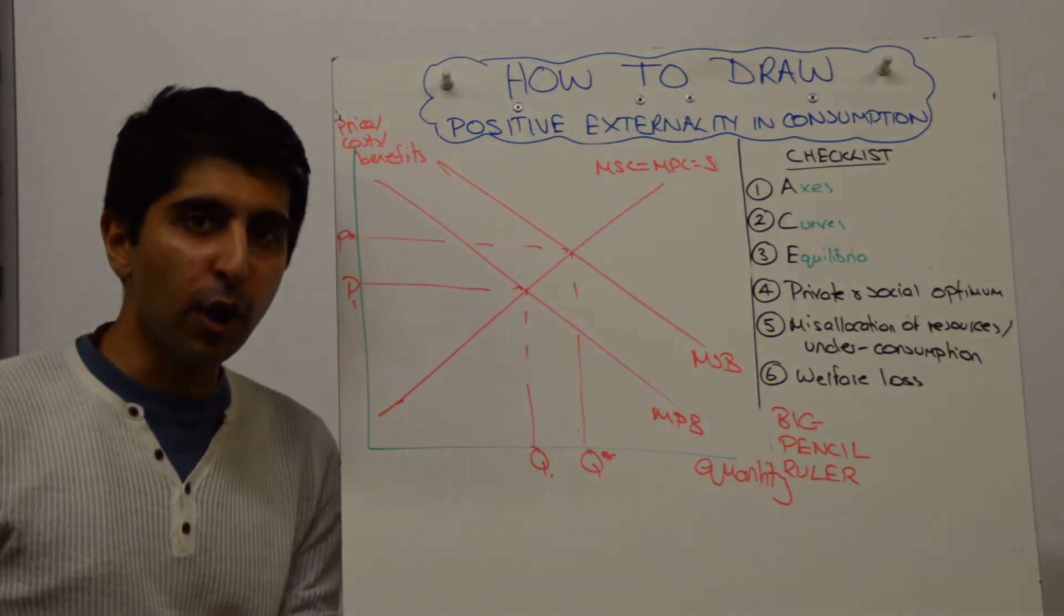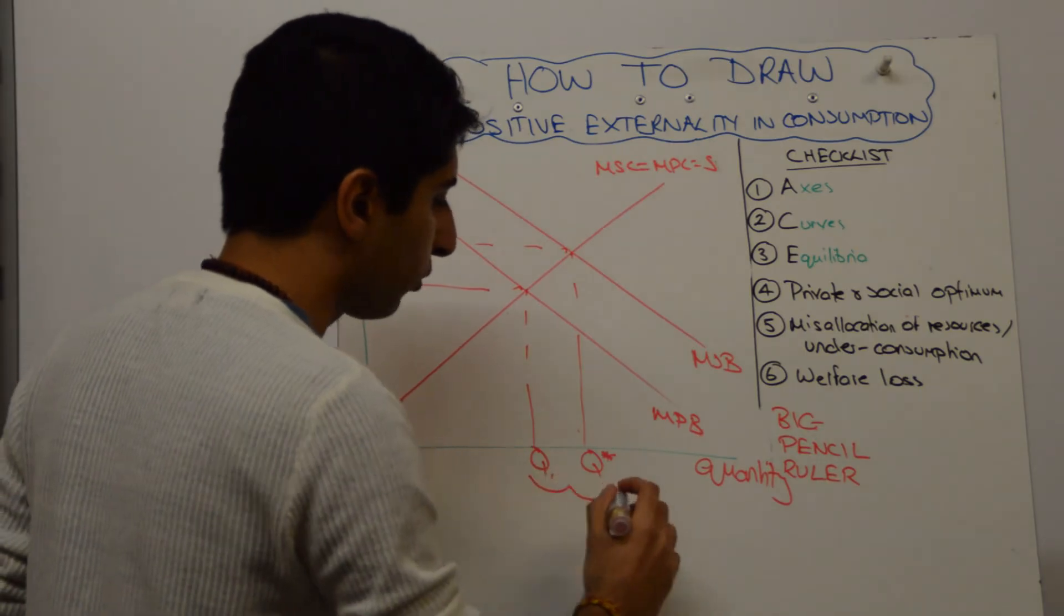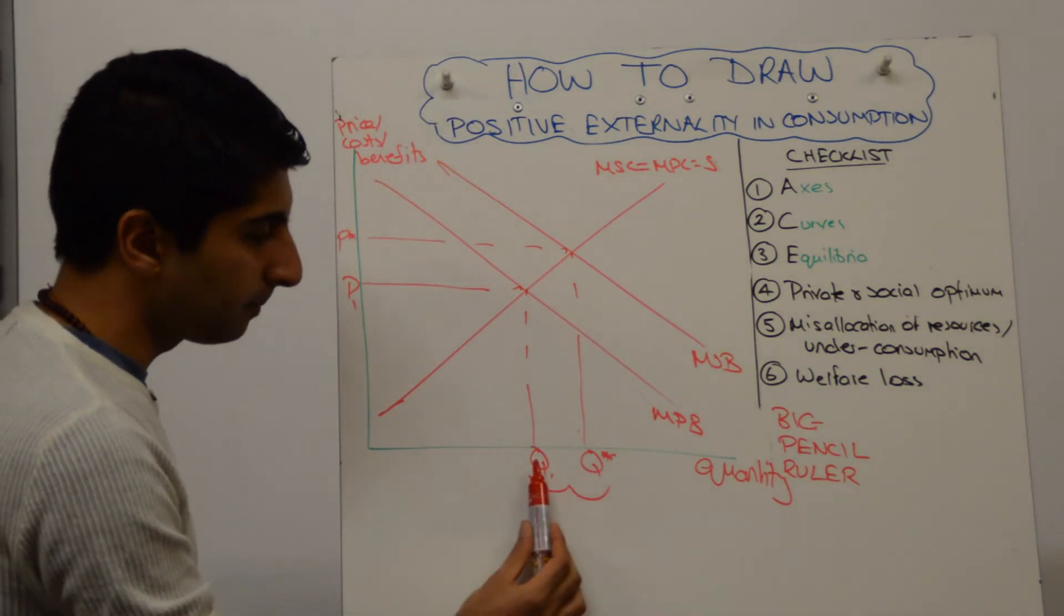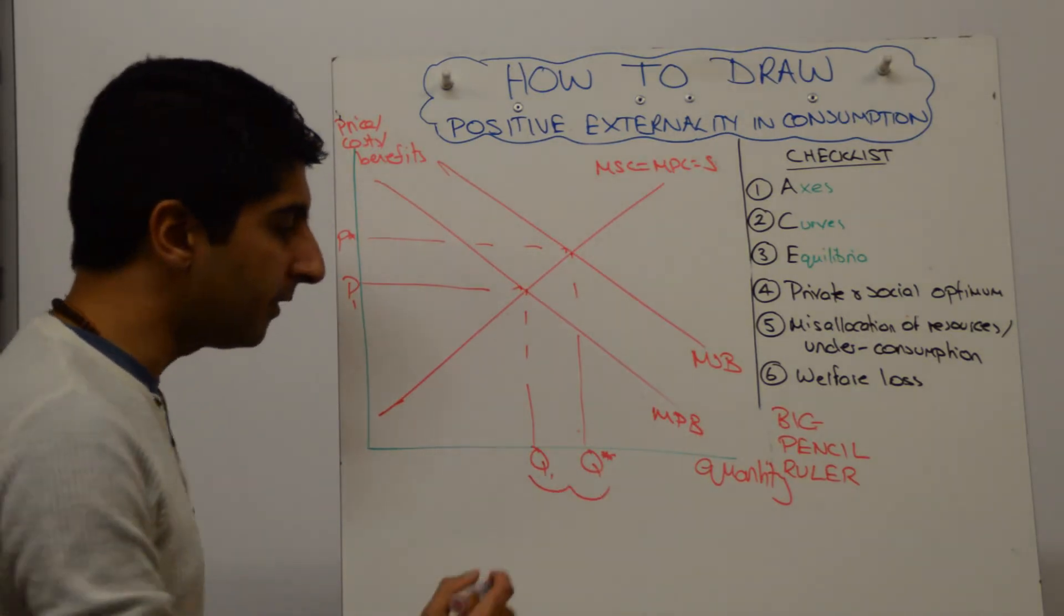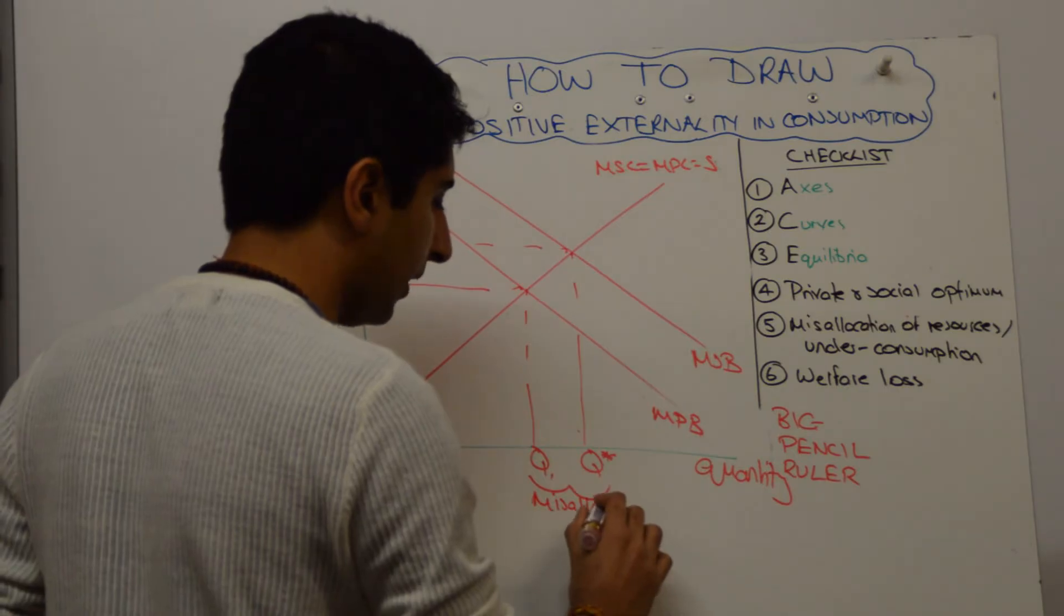Show the examiner you know that there is an under-consumption, that there aren't enough resources allocated to this product or this service that is socially desired. We know that because Q1 is less than Q star. There is a misallocation of resources. Make that clear by labeling it as such.